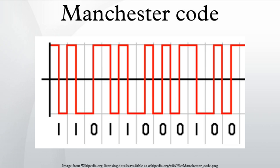Manchester code always has a transition at the middle of each bit period and may have a transition at the start of the period also. The direction of the mid-bit transition indicates the data.